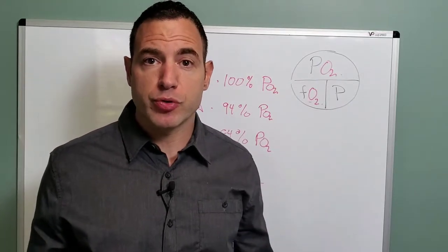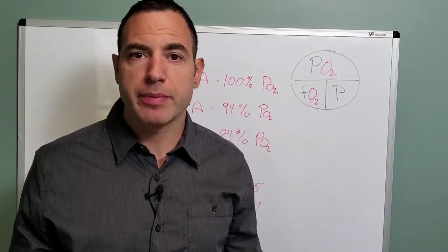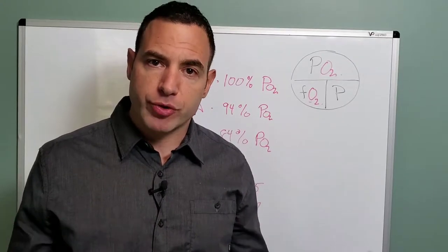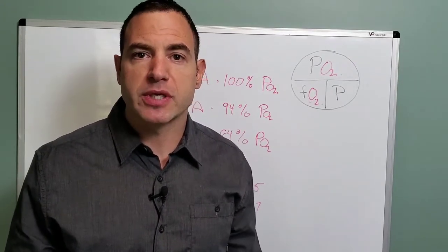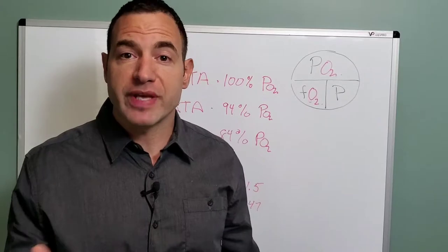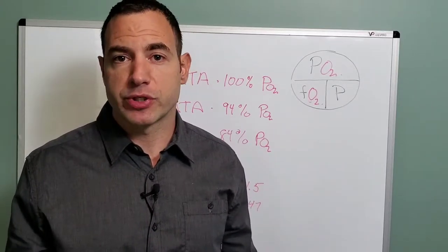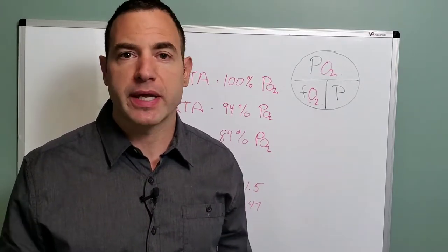So the PO2 is the dosage. Why? Because pressure is what creates the gradient and the gradient is what's allowing the gas to move into our plasma, move into our tissue. Without a gradient, we don't get gas movement, period.